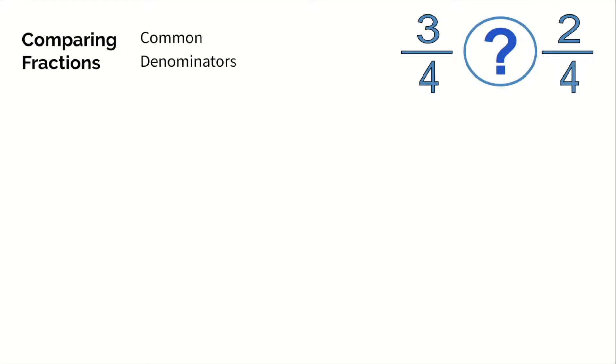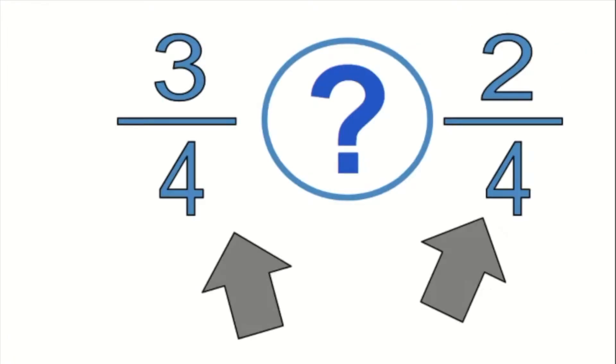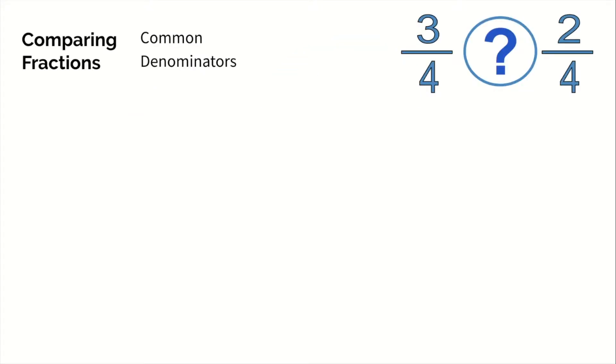Let's start with common denominators, and that simply means you have fractions that have the same denominator. In a fraction, the numerator tells you how many parts you have. The denominator tells you how many parts make up the whole.